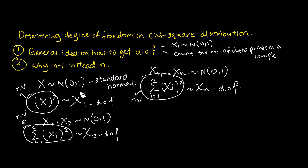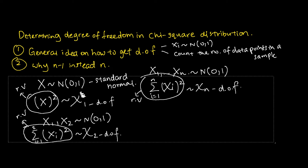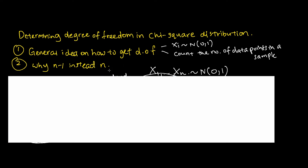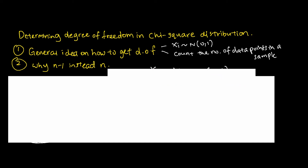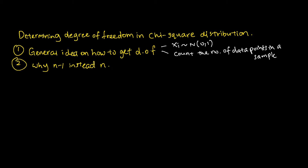So that explains part one. Now, for part two — why do people use n minus 1 instead of n? Let me explain why sometimes when we do the chi-square test, the degree of freedom is n minus 1 instead of n.